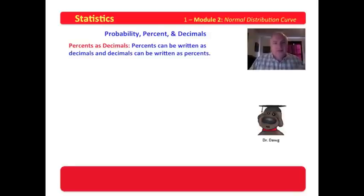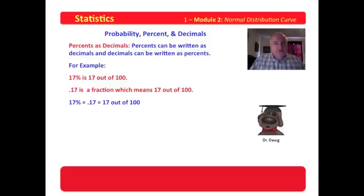Now, what we want to do is move on from probabilities to percents into decimals. Percents can be written as decimals and decimals can be written as percents. For example, 17% is seventeen out of 100. 0.17 is a fraction, which means seventeen out of 100. 17% equals 0.17 equals seventeen out of 100. So we can write that as a percent, we can write it as a decimal, or we can write it as a probability.